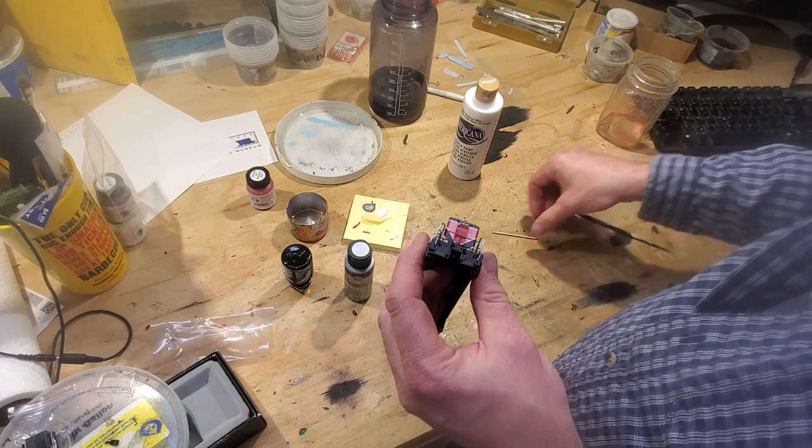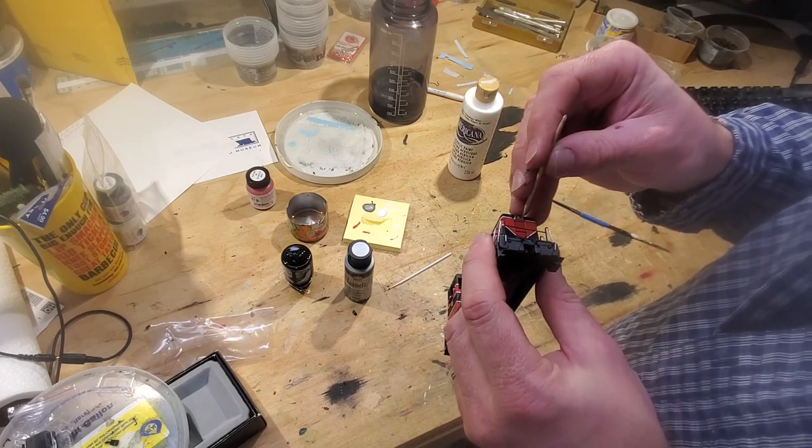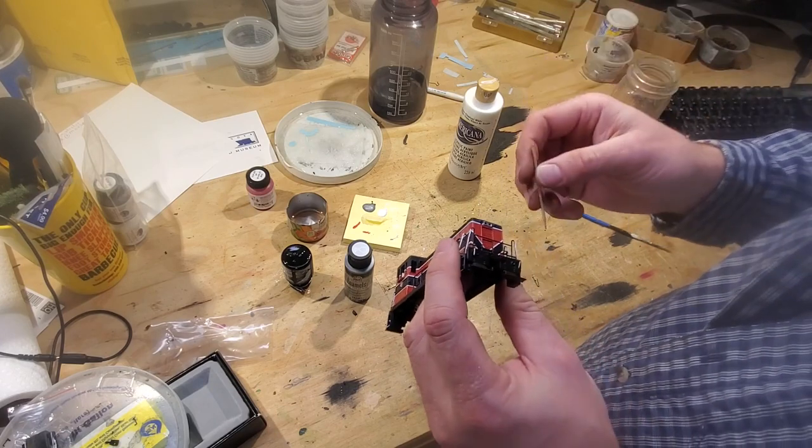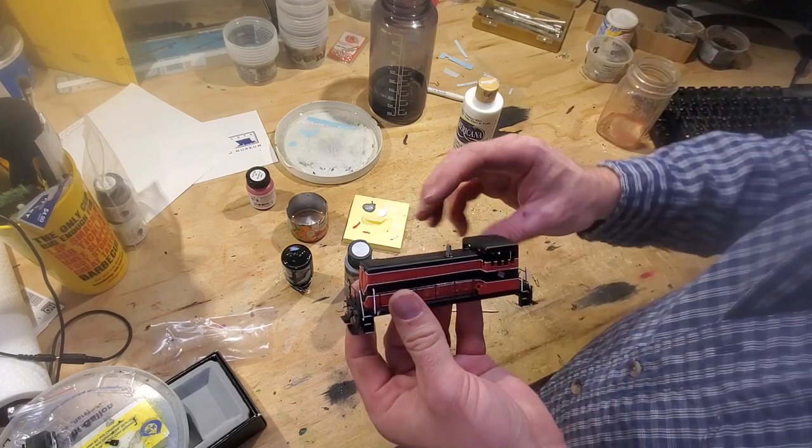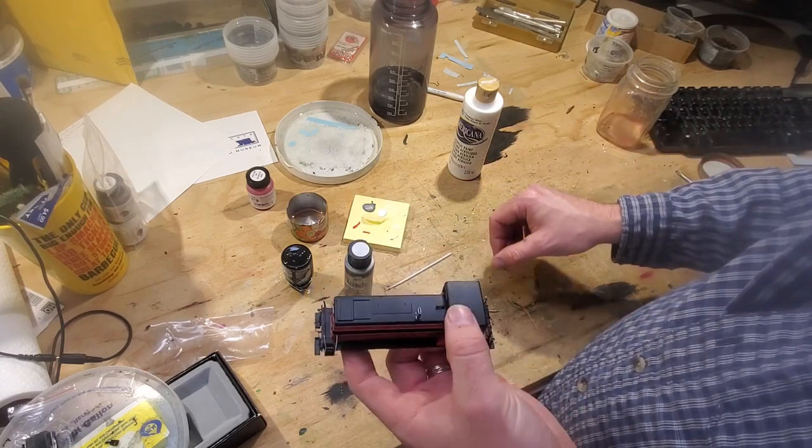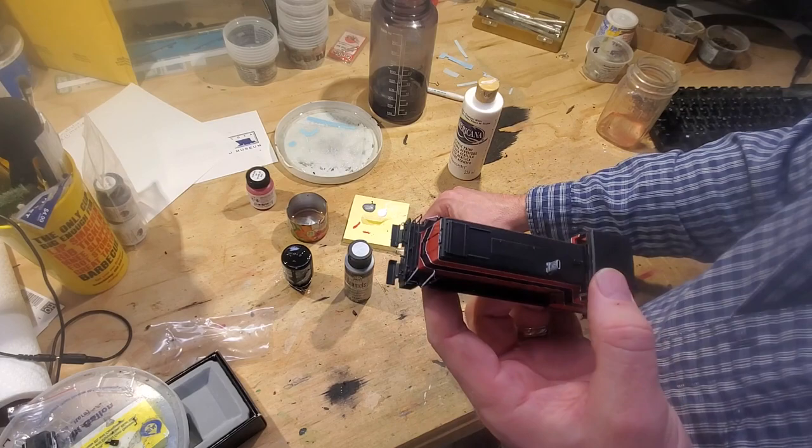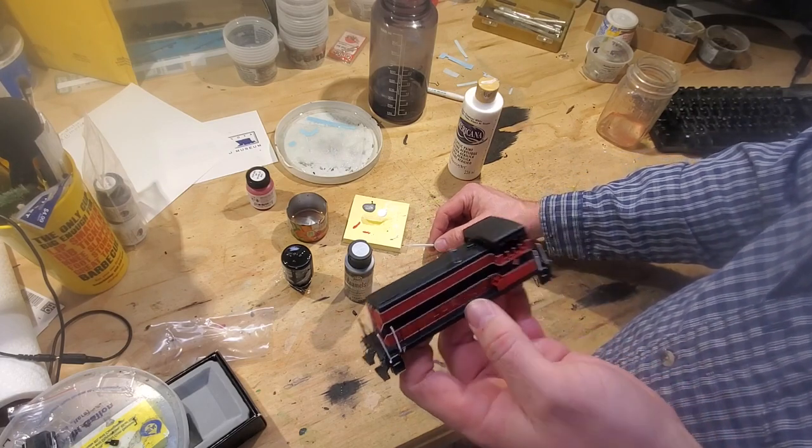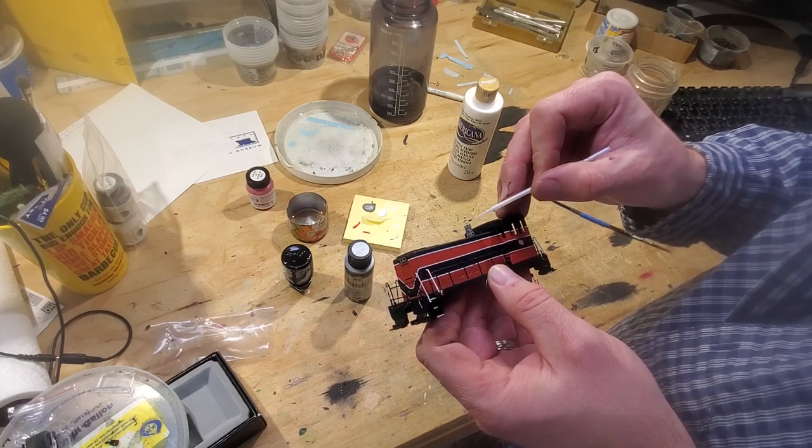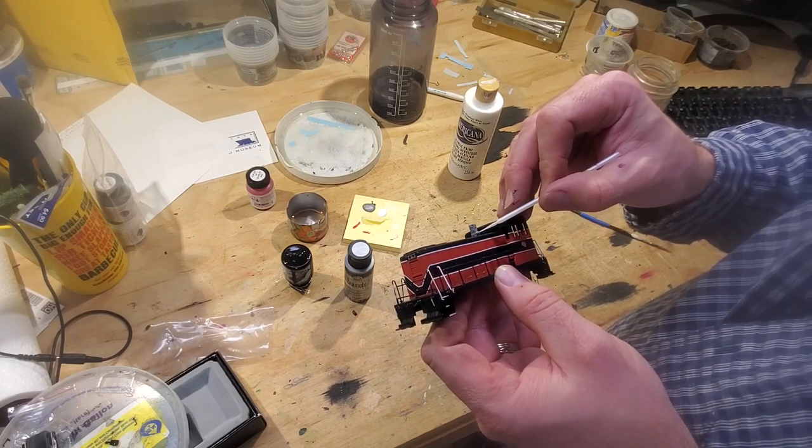And here what we're doing is we're painting the different color on the headlight housing here, making sure the paint doesn't dribble in there. I think that looks pretty good. We might touch up around that stack a little bit with the black, but I'm happy the way that turned out.